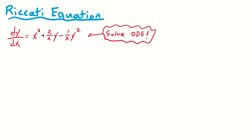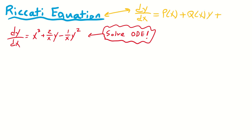Solve the ODE: dy/dx equals x cubed plus 2 over x times y minus 1 over x times y squared. The first thing to notice is that this is a Riccati differential equation, because it is of the form dy/dx equals p(x) plus q(x) times y plus r(x) times y squared.